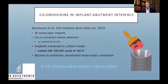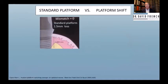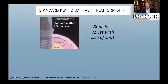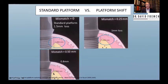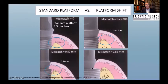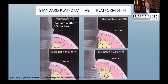Now let's talk about standard platform versus platform shift. Standard platform means the connection is flush, guaranteeing 1.5 mm of bone loss per Cochran's work. Moving that gap horizontally reduces bone loss, but only partially — a small step still yields about 1 mm vertical loss, a half-millimeter step yields 0.8 mm, and even a large inset still results in at least 0.6 mm. All platform shifts are prone to at least 0.5 mm of bone loss because the bacteria-laden gap, though moved horizontally, still impacts the bone.